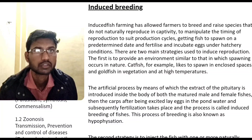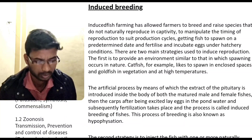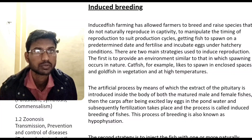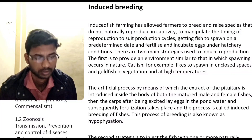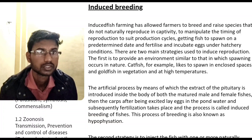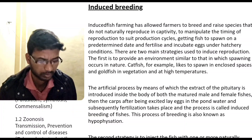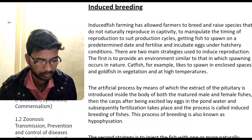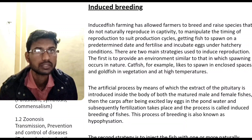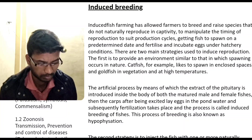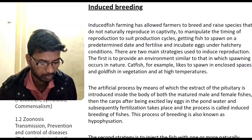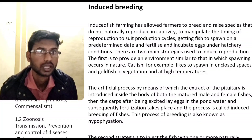There are two main strategies used to induce reproduction. The first is to provide an environment similar to that in which spawning occurs in nature. Catfish, for example, like to spawn in closed spaces, and goldfish in vegetation and at high temperatures.